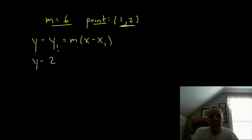We have y minus 2, that's the given y value, this is x1, y1, equals 6 times (x minus 1). So y minus 2 equals 6x minus 6, so y equals 6x minus 4.